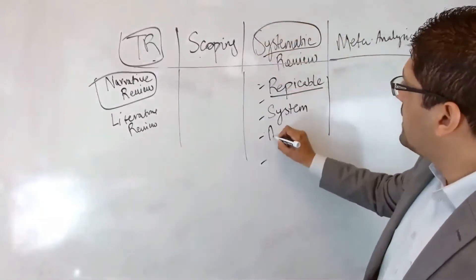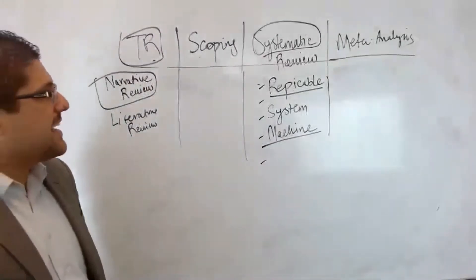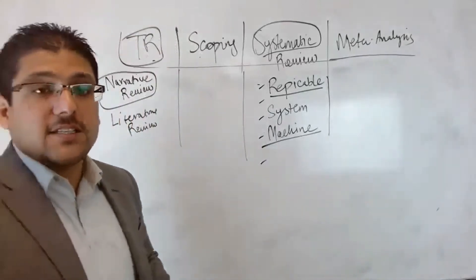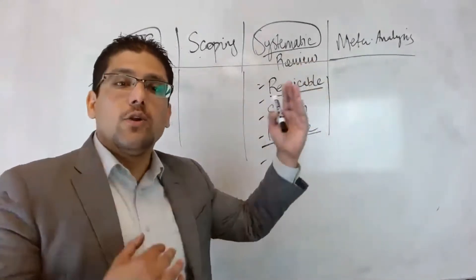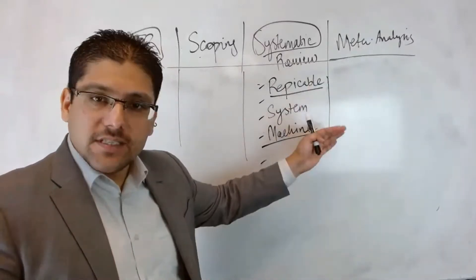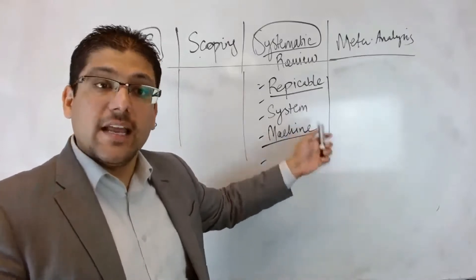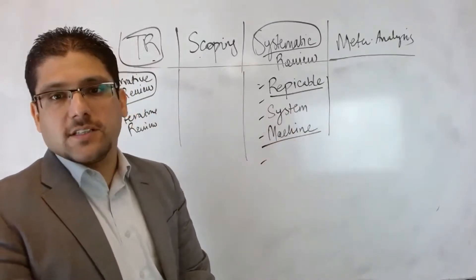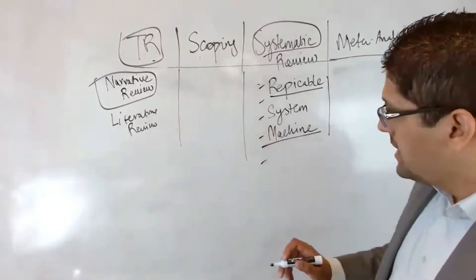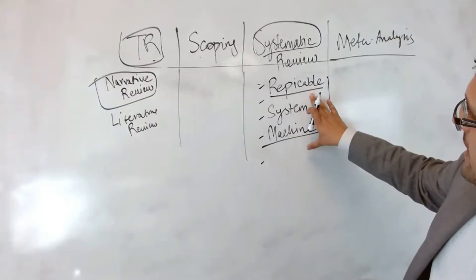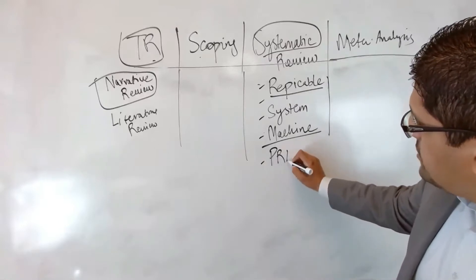We call it a systematic review because we are creating a system — like a machine where everyone gets the same results. A systematic review produces a methodology that is repeatable: if you see a systematic review today, and someone follows the same methodology 100 years later, they will get the exact same results. Systematic review is replicable, and you follow certain guidelines to create that system.